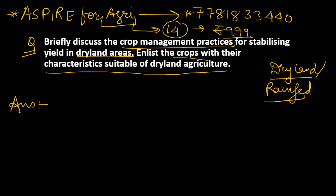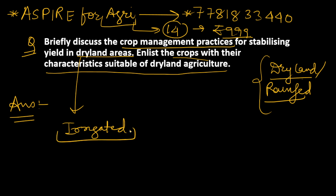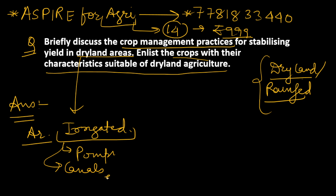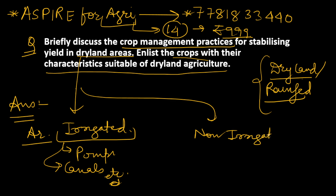How can we approach the answer? In the introduction, you can write that in India, we classify areas into two parts. First is irrigated, where artificial irrigation methods are present — it could be through pumps, canals, or various government irrigation projects. The other type is non-irrigated. In non-irrigated, we have rainfed and dryland.